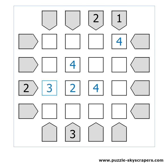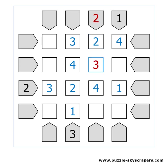We must have a 3 in this cell, because if it was 1 we would see 3 skyscrapers from the left. And we must have a 1 in this cell, because if it was a 3, we would see only 2 skyscrapers from the bottom. We complete the second column and the third row. Check out this cell. If we place a 1 there, then we will see 3 skyscrapers from the top. So we must have a 2 in that cell. If we place a 3 in the cell below, we will see 3 skyscrapers from the top. So we must have a 1 in that cell. The rest of the puzzle is easy to complete.